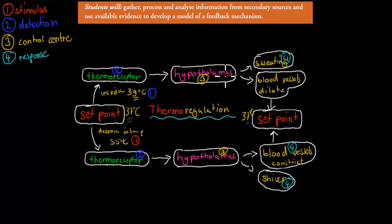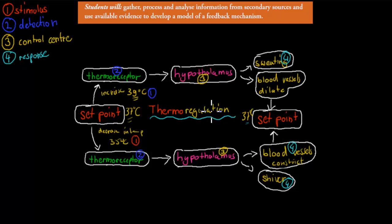So the feedback mechanism is that the response affects the stimulus. For this dot point you need to draw one of these diagrams and be able to know what is the stimulus, where does detection occur, which is the control center, and what kind of responses occur. I'm also going to quickly go over the different responses and explain what they are.